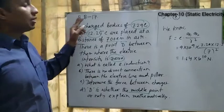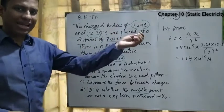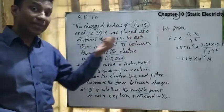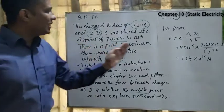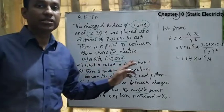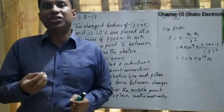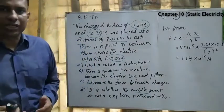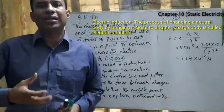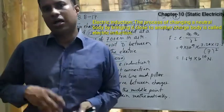This is another CQ from Mahishal Board 2017. The stem: two charged bodies of 7.29 Coulomb and 12.25 Coulomb are placed in air medium with a distance of 700 meters between them. There is a point D between them where the electric field intensity is zero. The first question: what is electric induction?